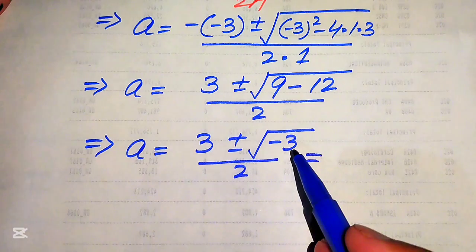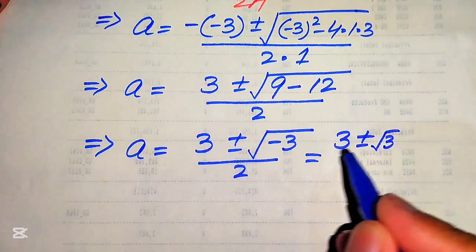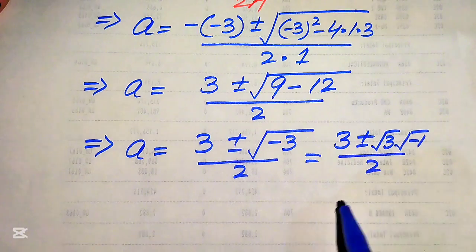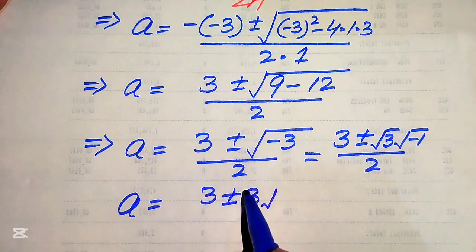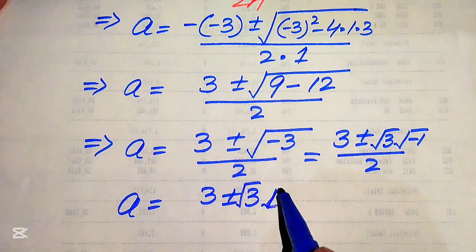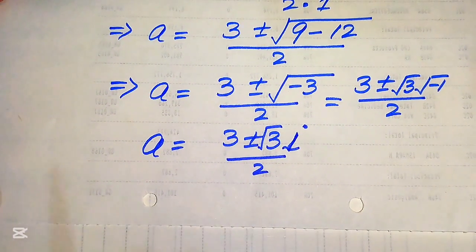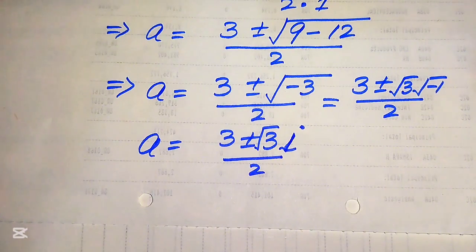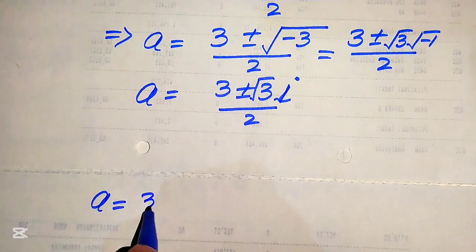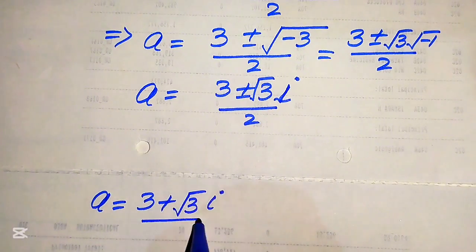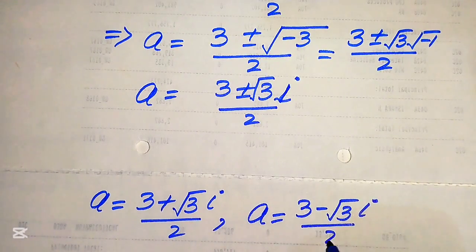A negative sign appears inside the square root, so we split it as square root of 3 times square root of minus 1, divided by 2. Since square root of minus 1 equals iota, this gives us 3 plus or minus square root of 3 times iota, all divided by 2. So the two values of A are: A equals 3 plus square root of 3 times iota divided by 2, and A equals 3 minus square root of 3 times iota divided by 2.